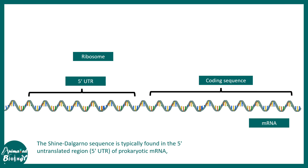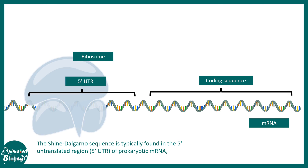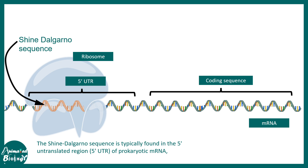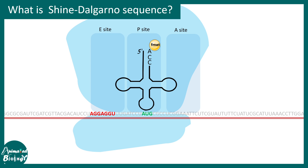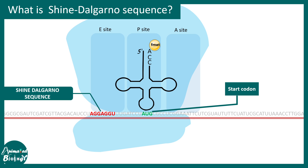The Shine-Dalgarno sequence is present in the prokaryotic mRNA in the 5' UTR. This particular sequence is important for the ribosomal subunit to bind to the mRNA.